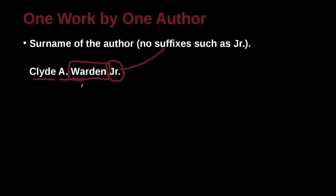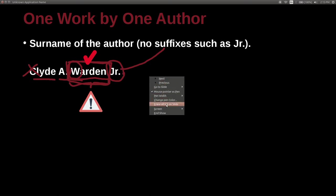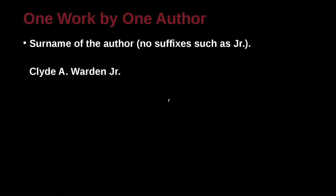When we are citing a person, we pay attention to the family name, or the last name. This is the name we use to order our references — that is, alphabetical order A to Z — based on the W in Warden, not based on the first name initial C. We do this because we're going to order our list later.